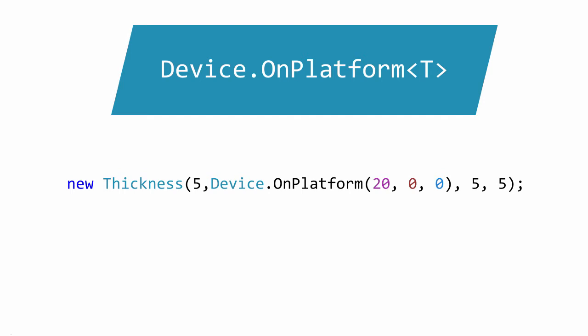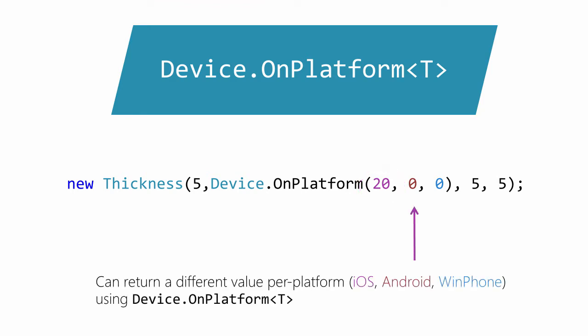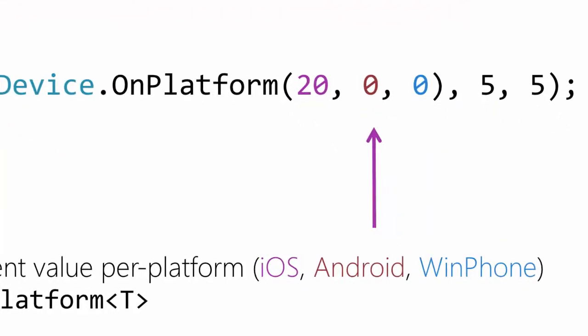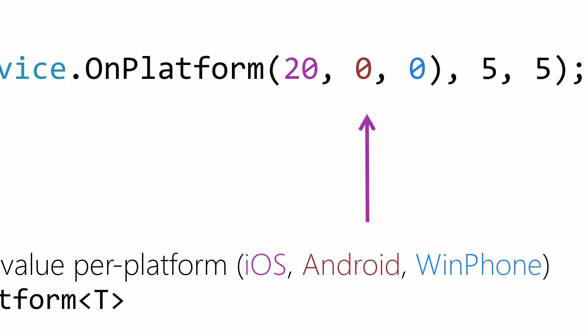For example, we are adjusting the top of the thickness class based on the iOS platform, returning only 20 for that case. The important thing here is we are putting this into our shared code, but making it execute a specific branch or return a specific value based on the platform we are executing on at runtime.